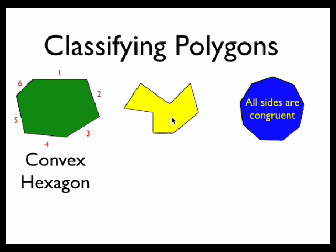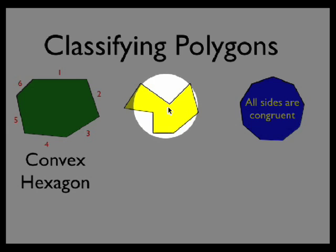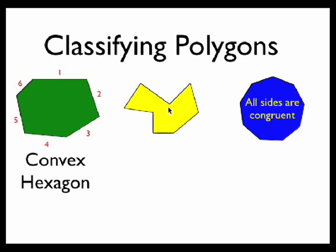Our second shape does contain vertices on the interior of the polygon, so this would be considered concave.